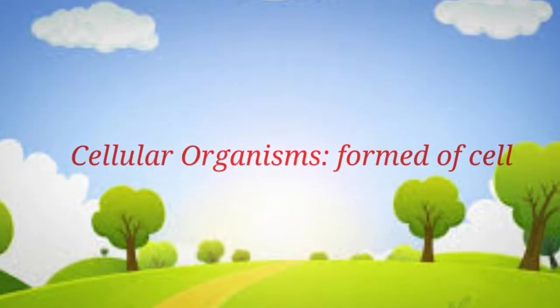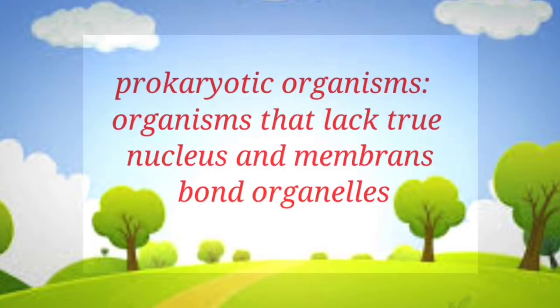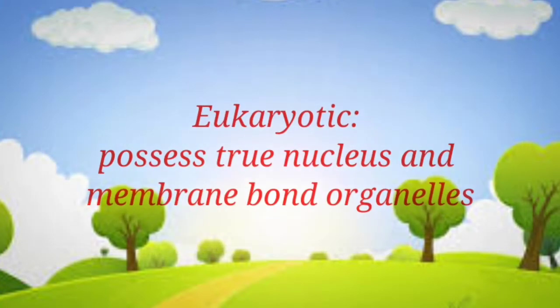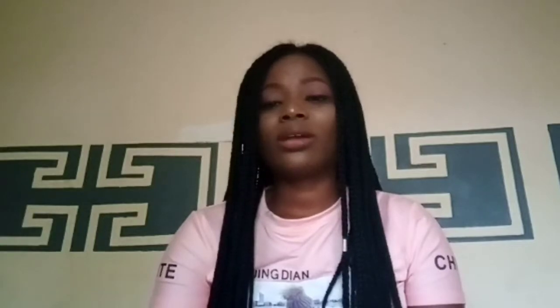Cellular organisms are those organisms that are made up of cells, and they can either be prokaryotes or eukaryotes. Prokaryotic organisms are those organisms that lack a true nucleus and membrane-bound organelles, while eukaryotic organisms are those that possess a true nucleus and membrane-bound organelles, and they include bacteria, fungi, algae, protozoa, and archaea.